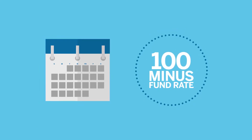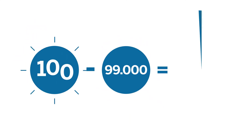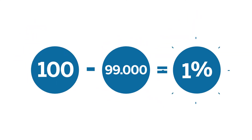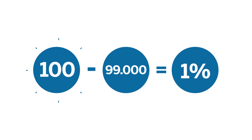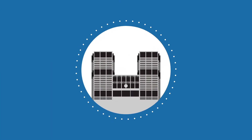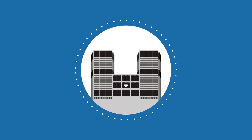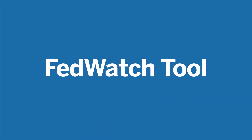For example, if the current month's contract is priced at 99, and the market expects the average federal fund's effective rate during that month to be 1%, they would calculate 100 minus 99. Using this information, CME Group created the FedWatch tool.